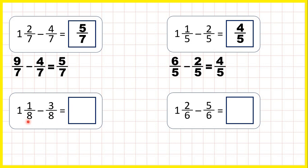One and one-eighth minus three-eighths. So one and one-eighth is the same as nine-eighths, because one times eight is eight, plus one is nine, and we're subtracting three-eighths.